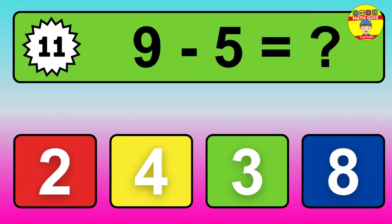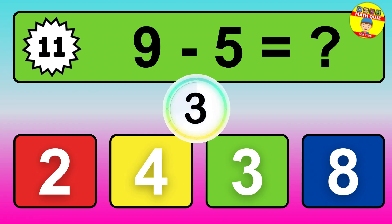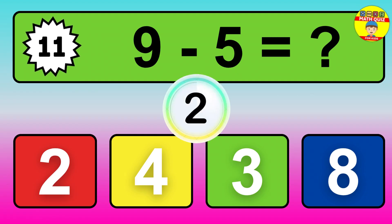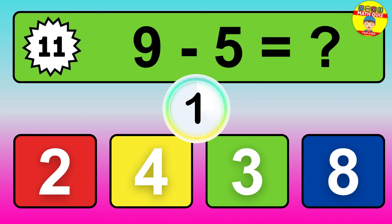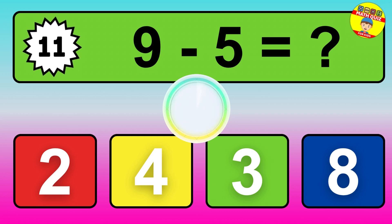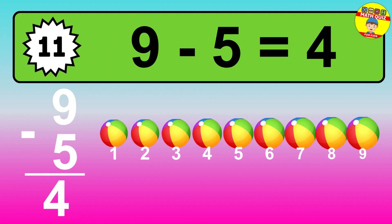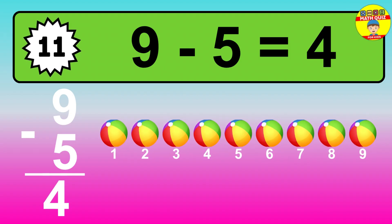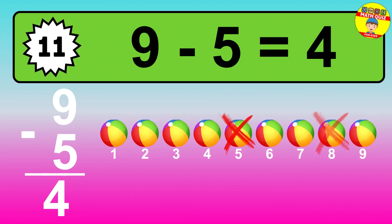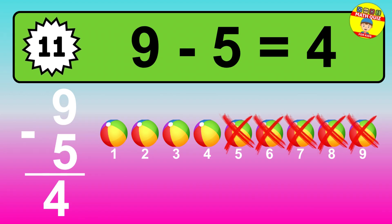Question 11: 9 minus 5 equals what? The answer is: 9 minus 5 is 4. Let's count it: 1, 2, 3, 4.